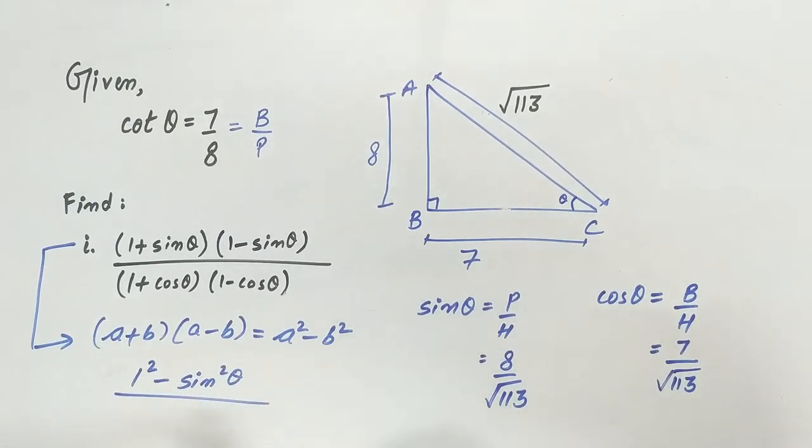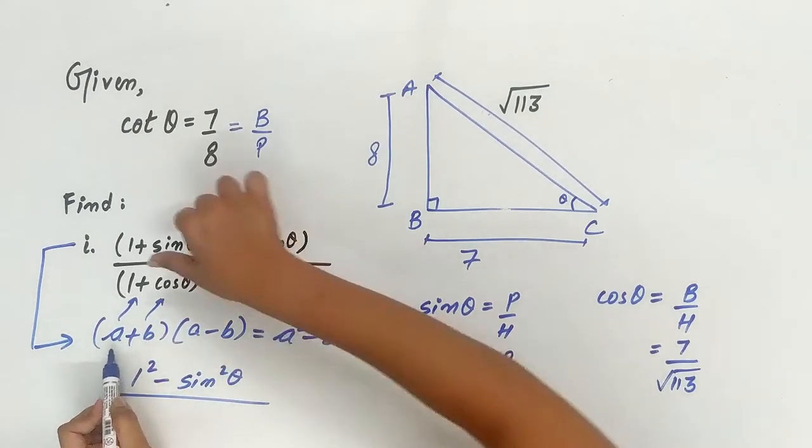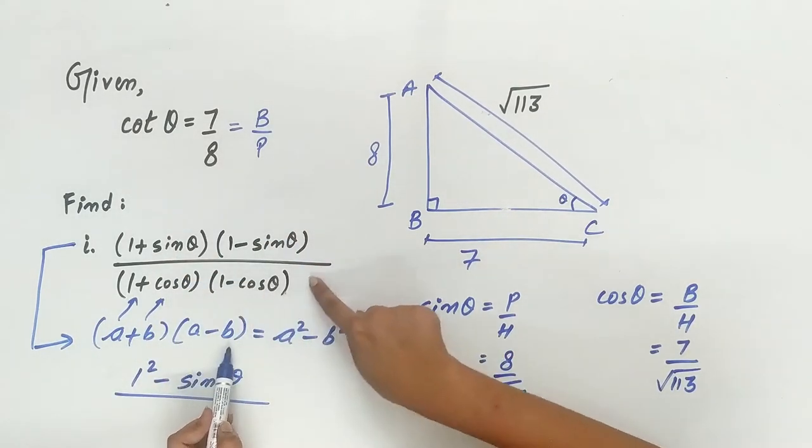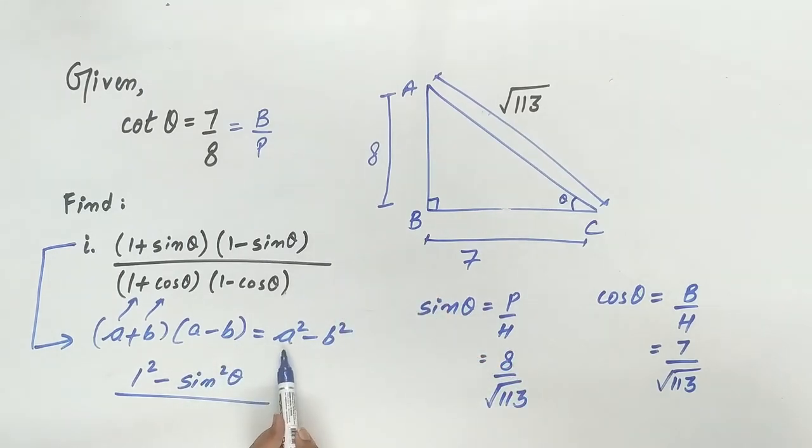And similarly, A is 1 and B is cos theta. So, 1 plus cos theta multiply 1 minus cos theta is equal to 1 square minus cos square theta.